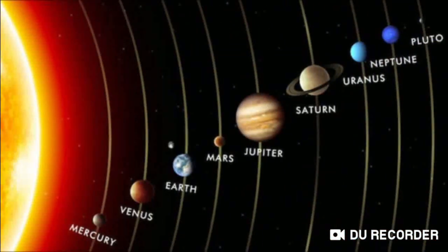About planets: the heavenly bodies that do not twinkle are called planets. Planets do not have light of their own — they get light from the stars. Now let us talk about the solar system. The Sun, which is a star, and the planets that revolve around it are together called the solar system.